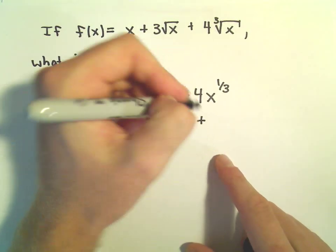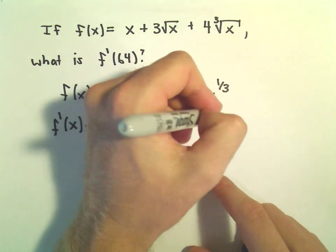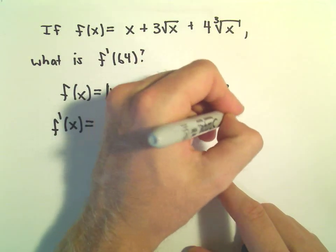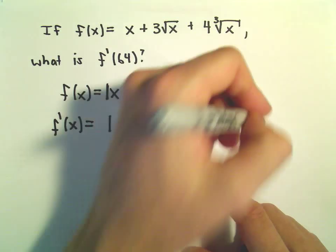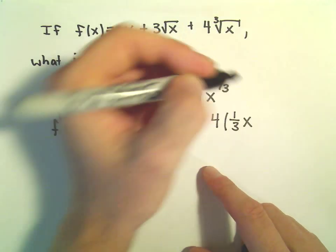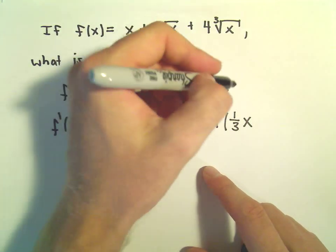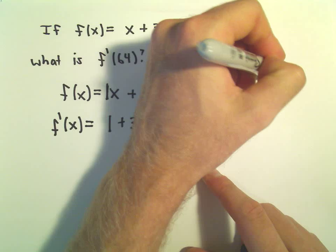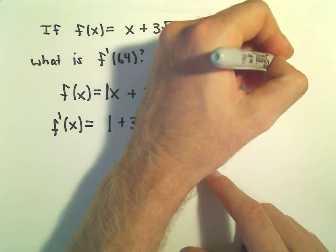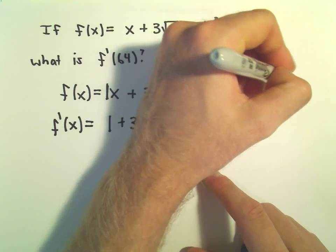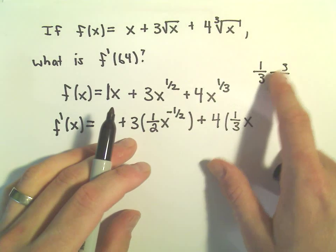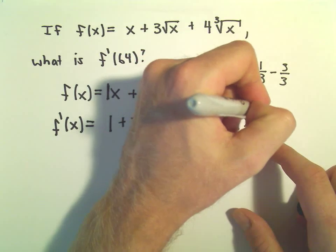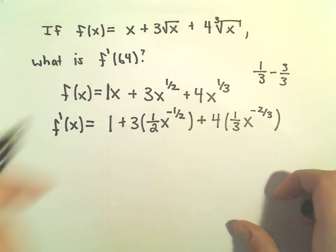The derivative of 4x to the 1 third — we leave the 4 alone, the 1 over 3 comes out front, and we subtract 1 from our exponent. If you think about subtracting 3 over 3, doing 1 third minus 3 over 3 gives us x to the negative 2 thirds power.